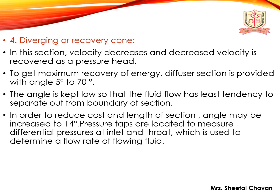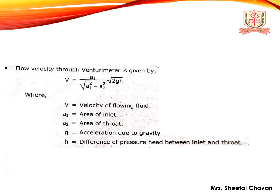The fourth section is the diverging or recovering cone, where velocity decreases and the decreased velocity is recovered as pressure head. The diffuser section has an angle of 5 to 7 degrees to minimize flow separation, though it may be increased to 14 degrees to reduce cost and length. Pressure taps at the inlet and throat measure the differential pressure to determine the flow rate. The flow velocity through the venturimeter is given by: V = (a1 / √(a1² − a2²)) × √(2gh), where V is velocity, a1 is inlet area, a2 is throat area, g is acceleration due to gravity, and h is the pressure head difference between inlet and throat.